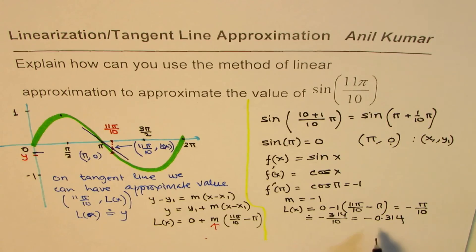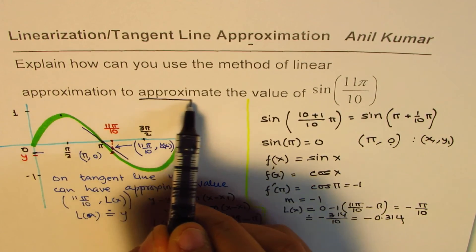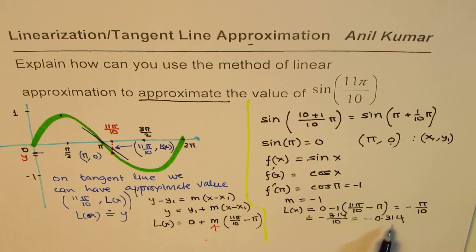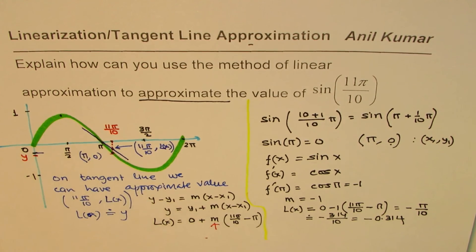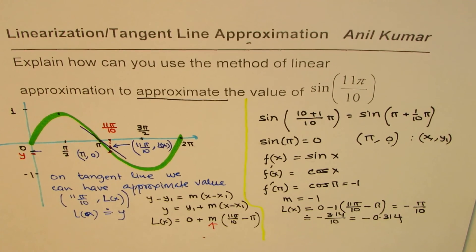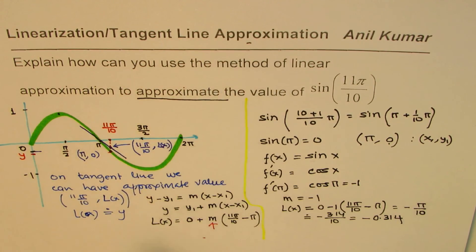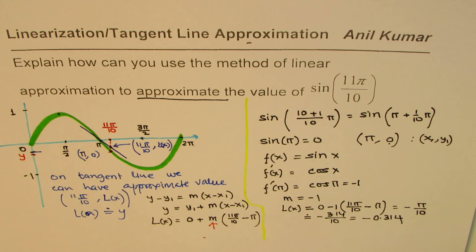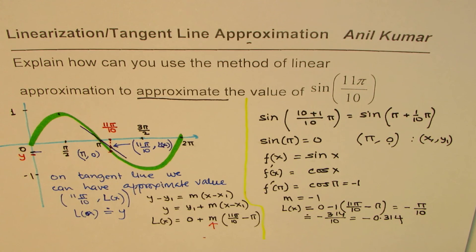This value is slightly away from the actual value, which is why we call it an approximate value. We know the linear approximation is slightly more than the actual value, but it is very very close. I hope you've understood how tangent line approximation works and how accurately we can find this answer — to two decimal places we are always right with this kind of approximation. We'll take some multiple choice questions to help prepare for tests like AP Calculus or SAT. I'm Anil Kumar — share and subscribe, thank you and all the best.